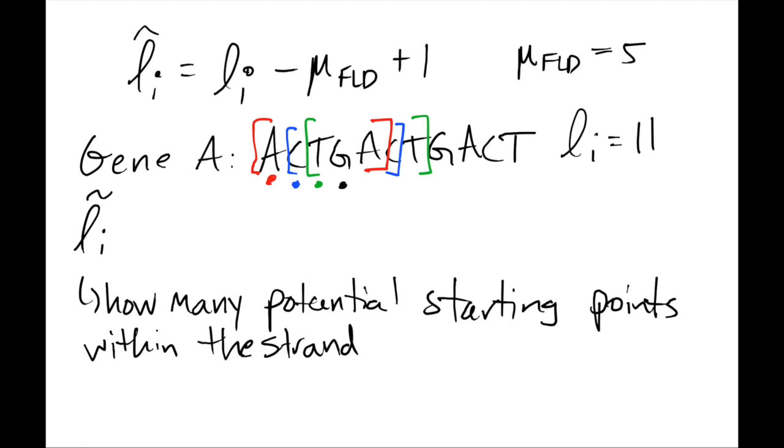You would get a total of 1, 2, 3, 4, 5, 6, 7 potential starting sites for this gene that is length 11. You have 7 potential starting sites for the fragments, assuming the fragments have a mean length of 5. This effective length would thereby be equal to, using the formula, 11 minus 5 plus 1, which is 6 plus 1, which is 7.